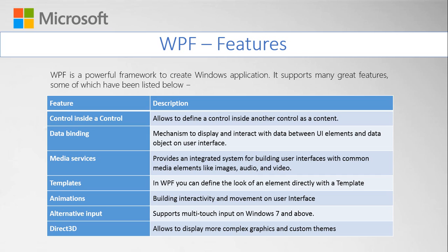Media services in WPF provide an integrated system for building user interfaces with common media elements like images, audio, and video. You can define the look of an element directly with templates. Animations allow you to add movement to controls directly on your UI. Alternative input supports multi-touch input like Windows 10, and Direct3D allows you to display more complex graphics and custom themes. These are the major features of WPF that help you build beautiful, attractive applications for users and clients.